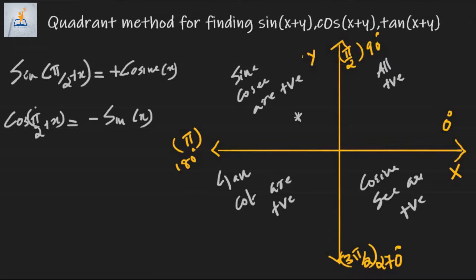Now we find sin(π + x). As you can see, π + x lies in the third quadrant where sin is negative, so the answer will be negative. Since the sum is taken with an integral multiple of π, the function remains the same. Hence, sin(π + x) = −sin x.